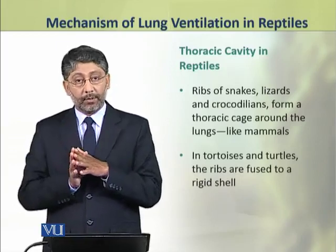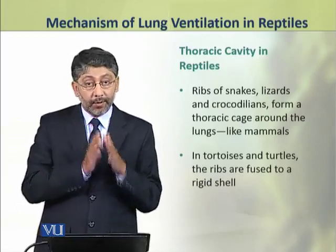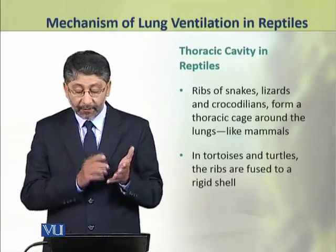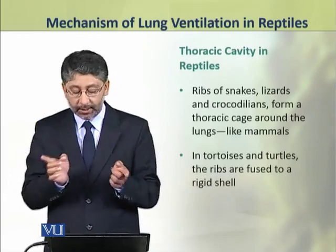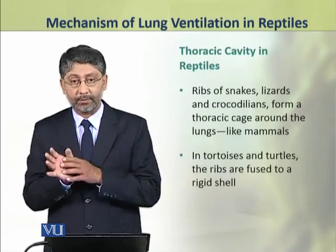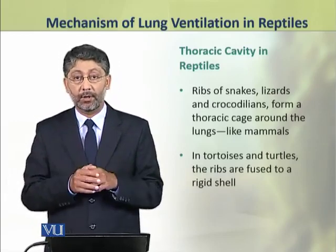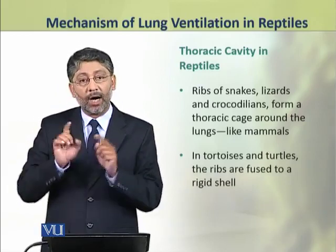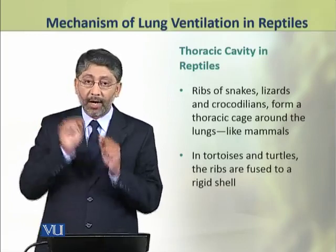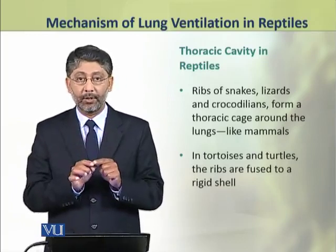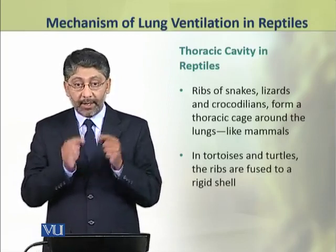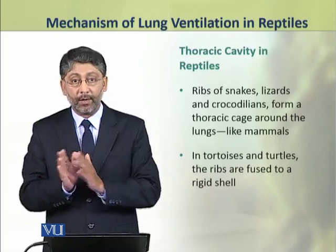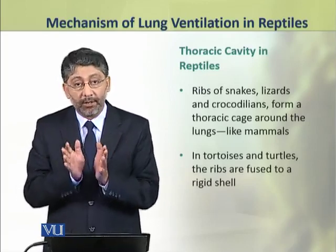The snakes, lizards, and crocodilians have ribs which form a thoracic cage around the lungs, just like mammals. However, in tortoises and turtles, the ribs are fused as part of the rigid shell. So these two groups — turtles and tortoises, and crocodilians, snakes and lizards — have different mechanisms of breathing.